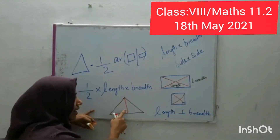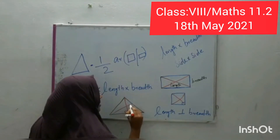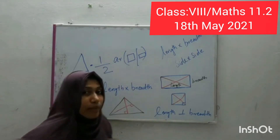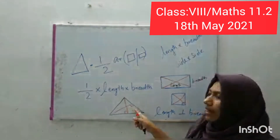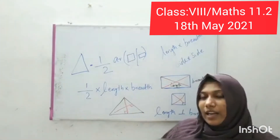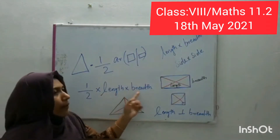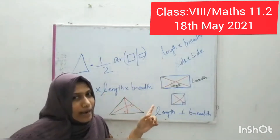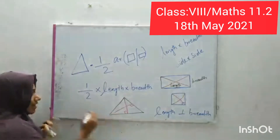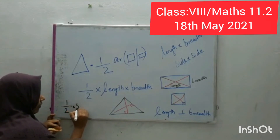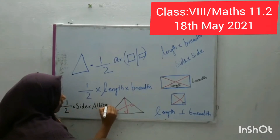The length's perpendicular is the breadth. For this side, we can draw it as simply the altitude — you already studied about altitudes, that is the perpendicular length. So breadth will be the altitude. Simply we can say: half into length into breadth, or half into side into altitude.